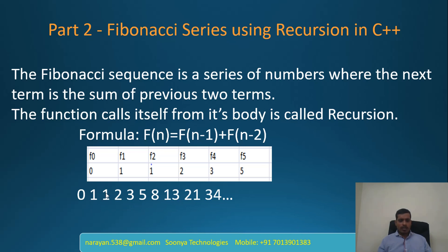To get the next value: 0 plus 1 is 1, 1 plus 1 is 2, 1 plus 2 is 3, 2 plus 3 is 5, and so on. We are going to discuss two approaches for the Fibonacci sequence. We will discuss this logic in Visual Studio — launch Visual Studio and create a C++ application.